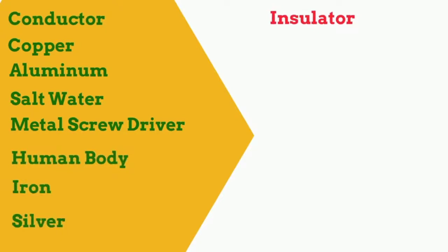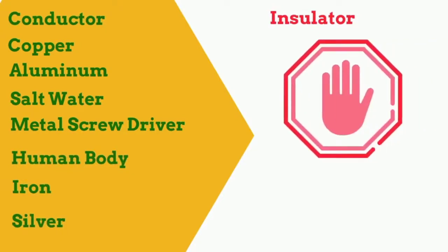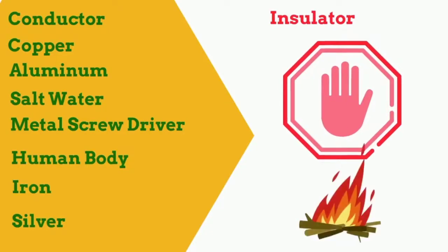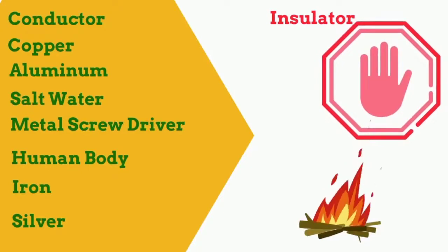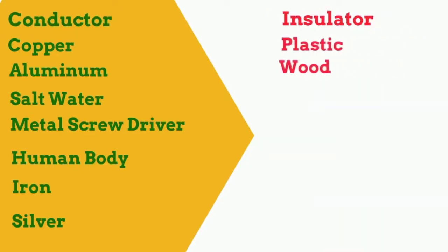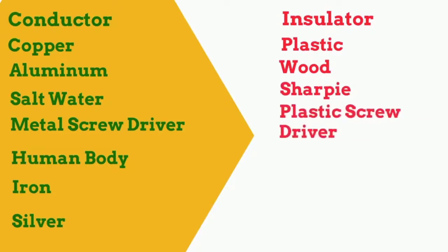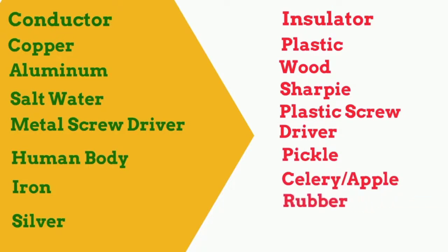And the insulators are red because they stop the flow of electrons. By the way, most electrical insulators and conductors are also thermal insulators and conductors. We have plastic, wood, the sharpie because it's plastic, the plastic end of the screwdriver, the pickle, celery, apple, and in addition, you have rubber, glass, and dry air.